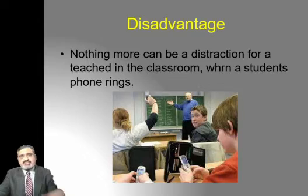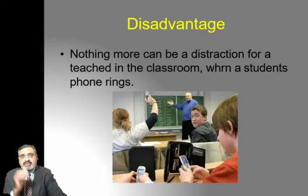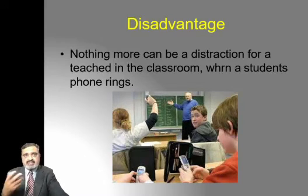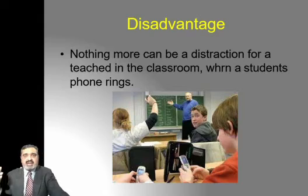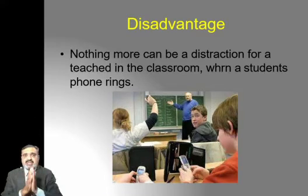Technology allows us to give students access to data from a single location. We can use emails and websites to access information. Different universities have their own software — for example, Virtual University has its own system, and other universities have their own portals — and students are getting information from those systems. This is possible with the help of technology.